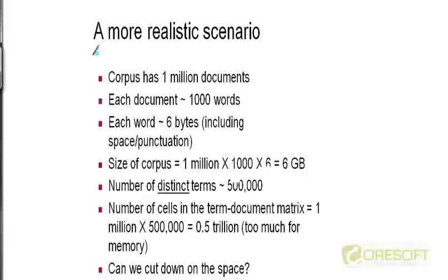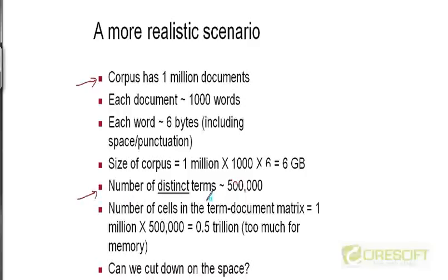Let's look at a slightly more realistic scenario where the number of documents in the corpus is not 37, as in Shakespeare's corpus, but about a million documents. It's still orders of magnitude smaller than the number of documents on the web, but it's slightly more realistic. For a million news documents, it turns out that if you do some empirical research, you find that the number of distinct terms in such a corpus will be about 500,000.